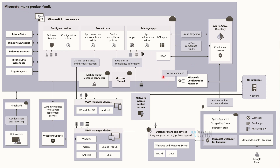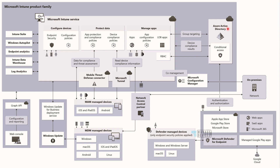Now let's look into the connections. Co-management is the connection between SCCM and Intune service, and co-management, cloud attach, and tenant attach are all using Intune service — that is the connection between Configuration Manager and Intune service. All group targeting is done via Azure Active Directory, and device compliance status and results are handled via Azure AD conditional access. RBAC is also a key service facilitated by the Azure Active Directory and Intune service integration.